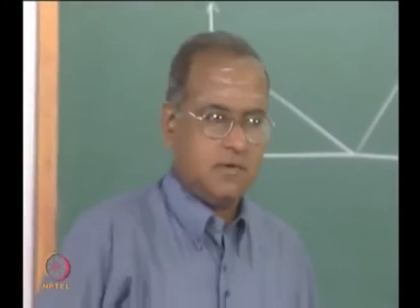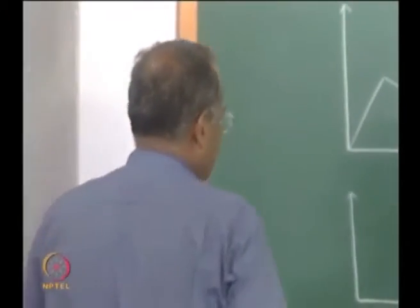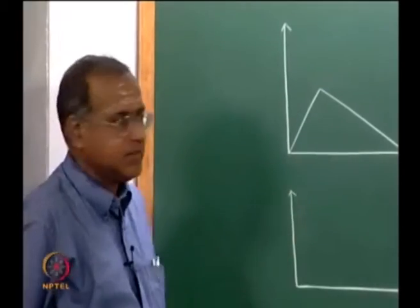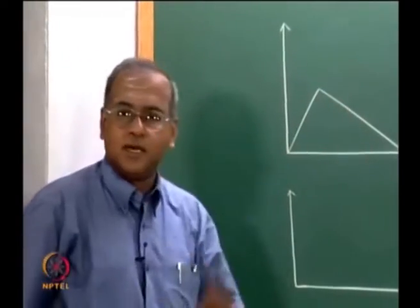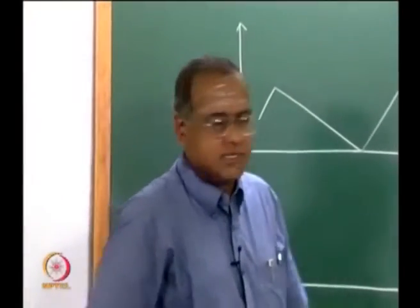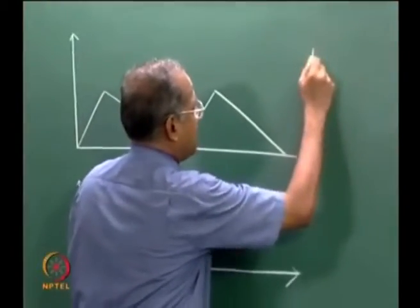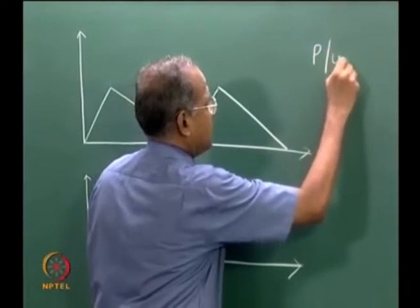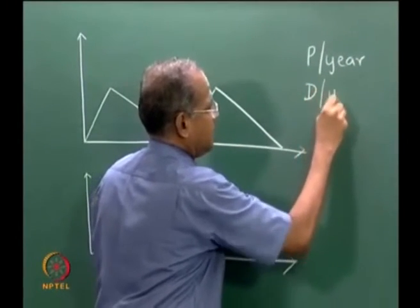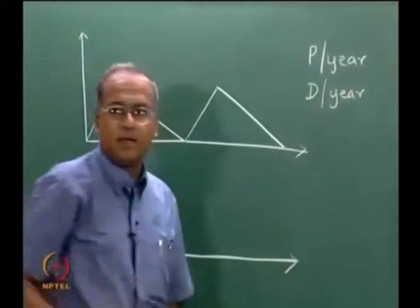In the previous lecture, we looked at models which are production and consumption models, which means if we consider a particular item, we can produce this item at the rate of p per year, while the demand for this item is d per year.